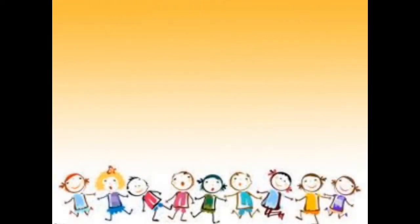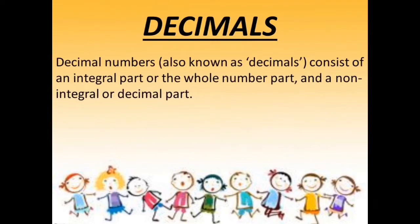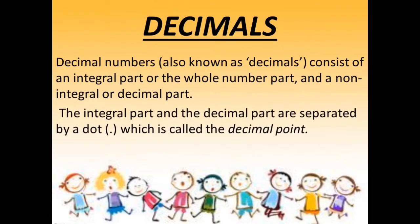What are decimals? Decimal numbers are also known as decimals and they consist of an integral part or the whole number part and a non-integral or decimal part. The integral part and the decimal part are separated by a dot which is called the decimal point. Let us see this with the help of an example.